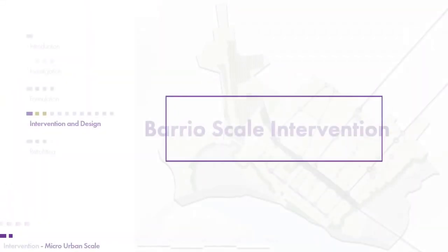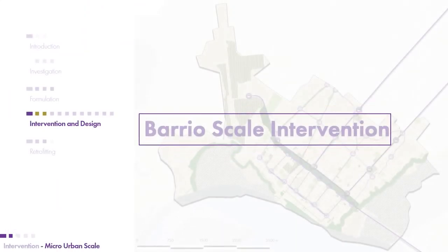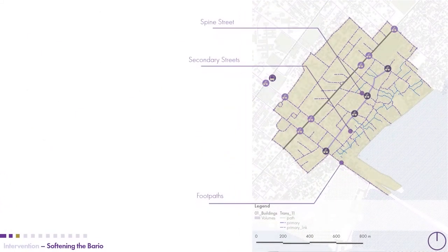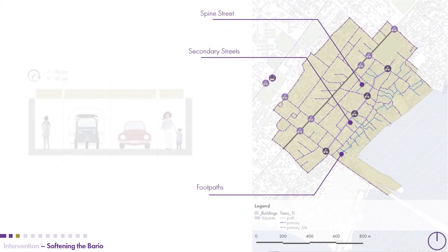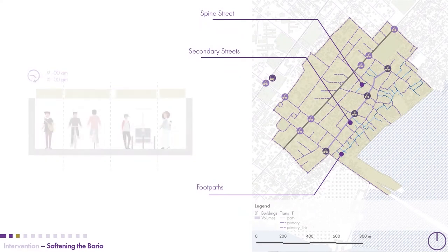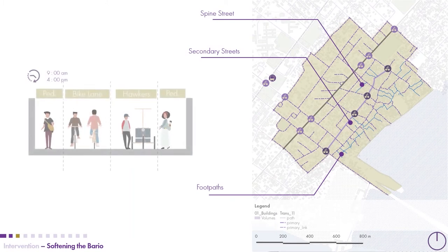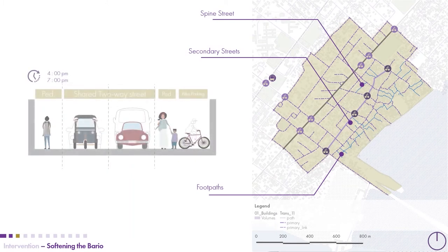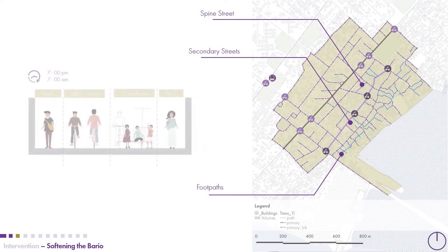At the barrier scale, we focused on how to achieve smartness directly within the barrier. First, we looked at softening the barrier by introducing the main street spine, which would house different activities at different times of the day. The same street changes in activities during the day and is able to multi-layer different activities for the people.